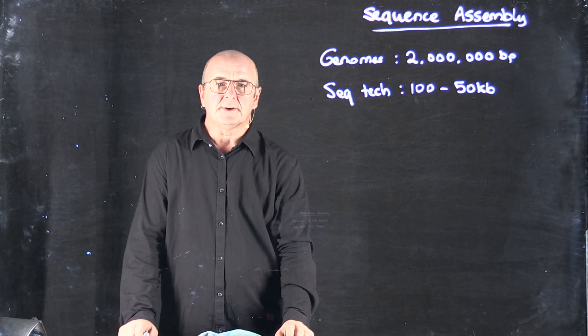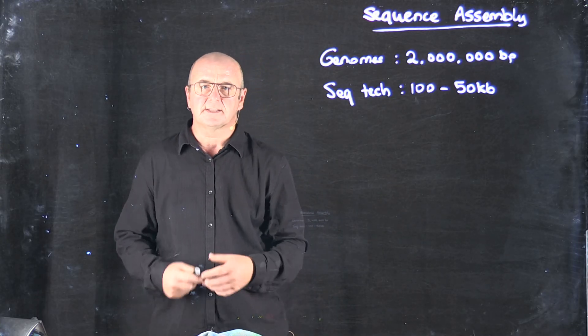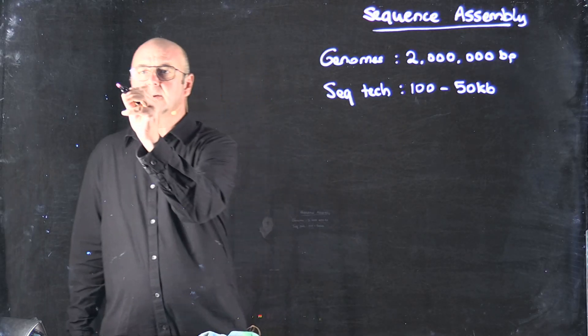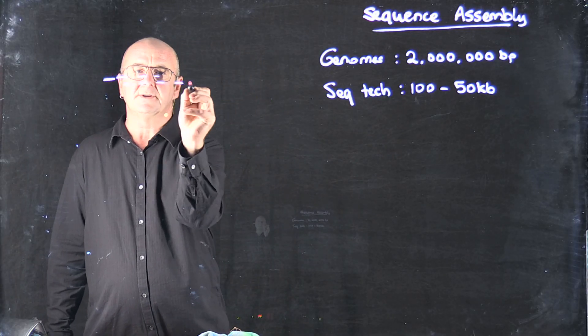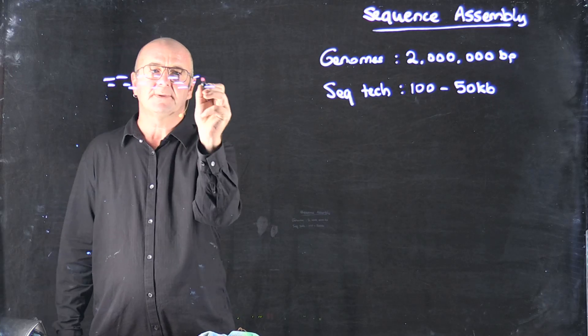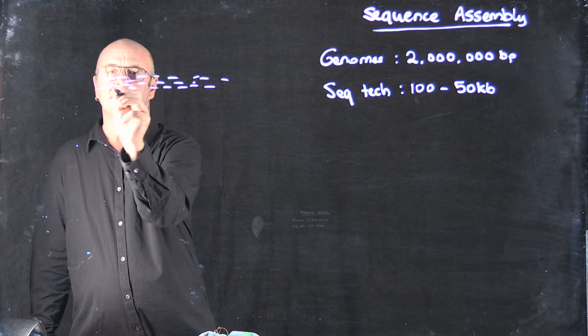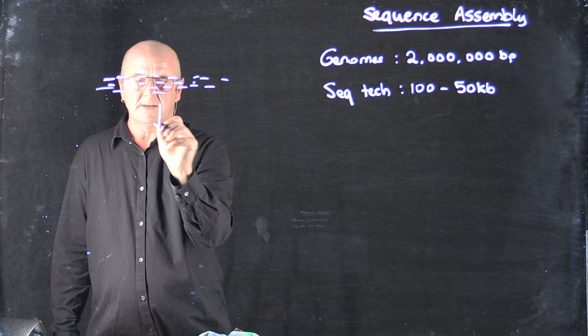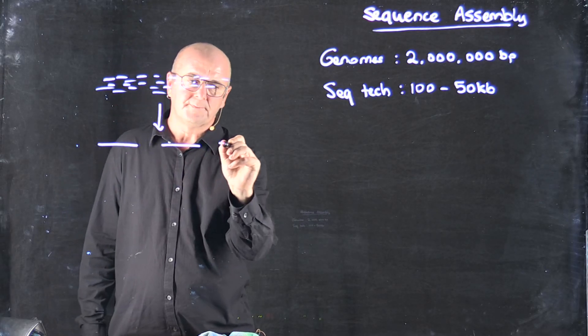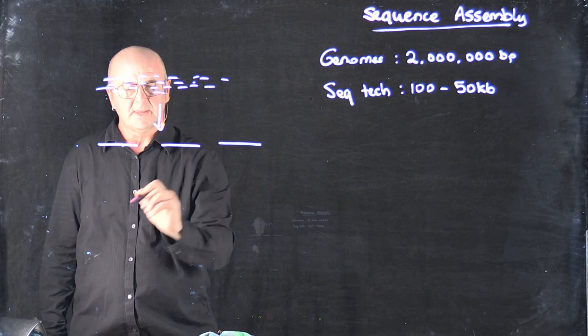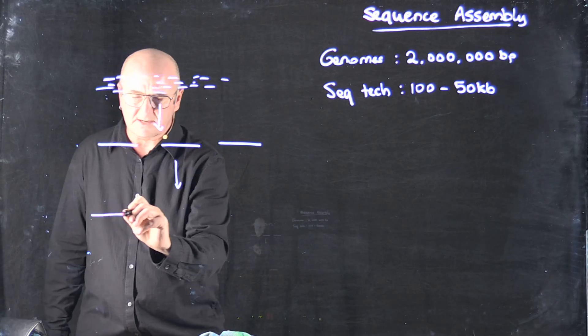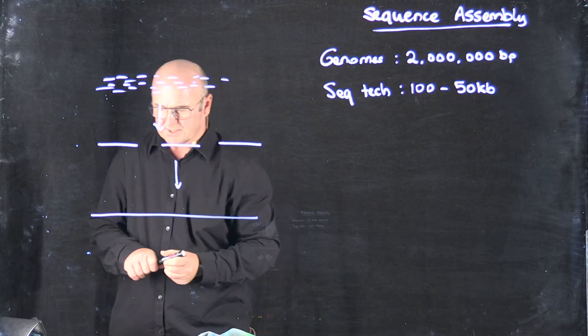So the problem with sequence assembly is basically how do we go from very short 100 base pair fragments into longer regions and then maybe even into even longer regions.